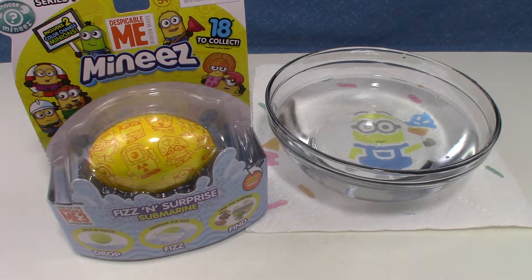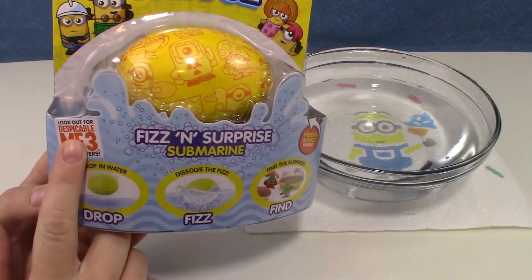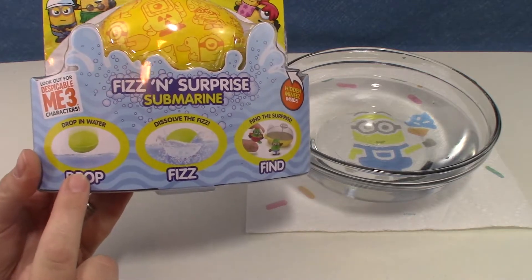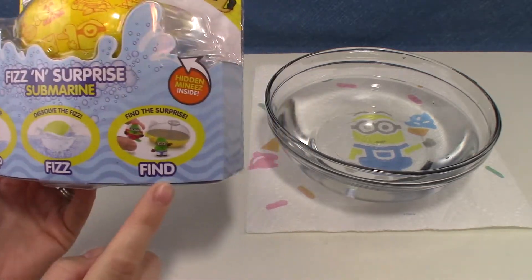And we're going to see how they color change. It says, look out for Despicable Me 3 characters. You drop it in the water, it fizzes, and then you find the surprise.